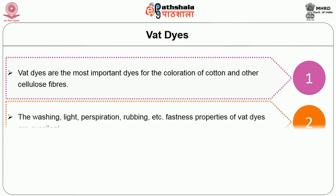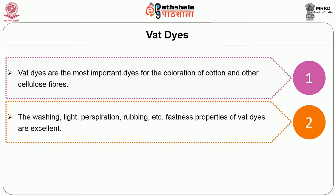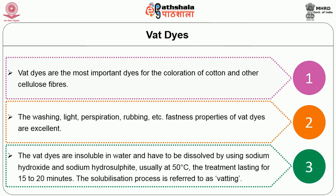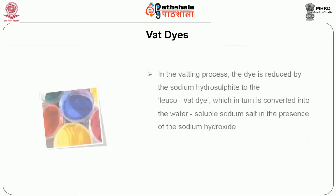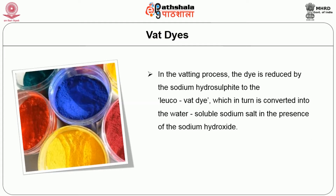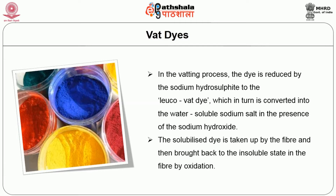Vat dyes are the most important dyes for coloration of cotton and other cellulosic fiber. The washing, light, perspiration, and rubbing fastness properties of vat dyes are excellent. Vat dyes are insoluble in water and have to be dissolved using sodium hydroxide and sodium hydrosulfite, usually at 50 degrees Celsius, with the treatment lasting 15 to 20 minutes. The solubilization process is referred to as vatting. In the vatting process, the dye is reduced by the sodium hydrosulfite to the leuco compound of the vat dye, which in turn is converted into the water-soluble sodium salt in the presence of sodium hydroxide. The solubilized dye is taken up by the fiber and then brought back to the insoluble state in the fiber by oxidation, which is mostly involved in gaining the fastness properties.